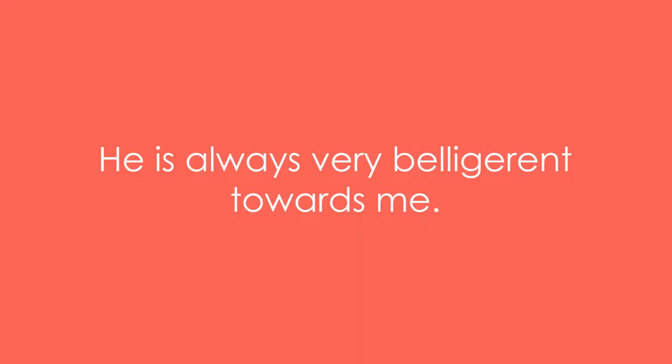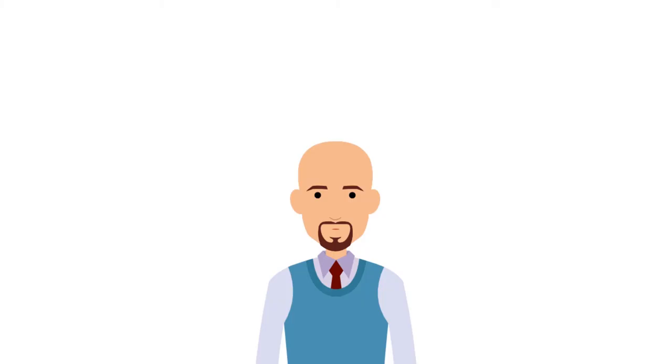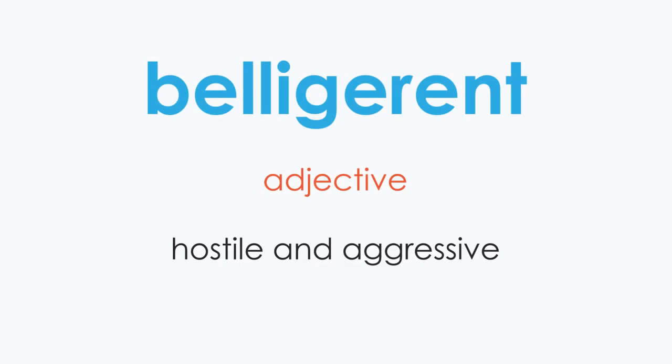Example four: he is always very belligerent towards me. Example five: Harris is a belligerent man with an explosive temper. That is the end of today's video — kindly share your suggestions in the comment box below.